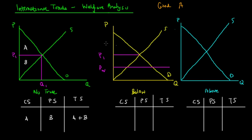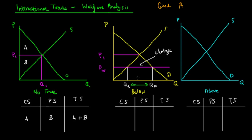At the world price PW, we can see that domestic producers are only willing to supply QS, while the domestic demand for Good A at that price is QD. This means that to make up for this shortage, consumers in the economy would tend to import this good. The difference between QD and QS is known as imports.